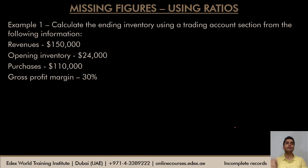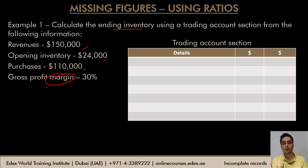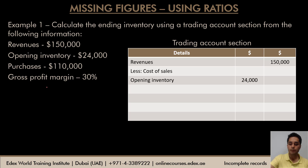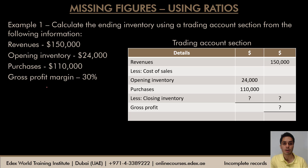Example one: calculate ending inventory using the trading account section. Revenues are 150,000, opening inventory is 24,000, purchases are 110,000, and gross profit margin is 30%. Placing given values in the trading account: revenues 150,000, opening inventory 24,000, purchases 110,000 — but closing inventory is not given, so cost of sales and gross profit are also not yet available. We'll use the gross profit margin to find the missing numbers.